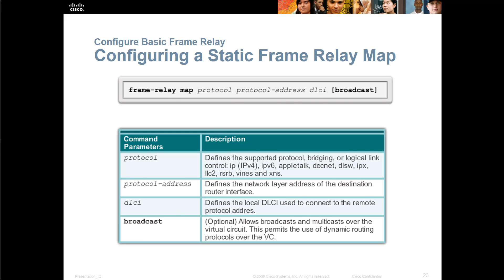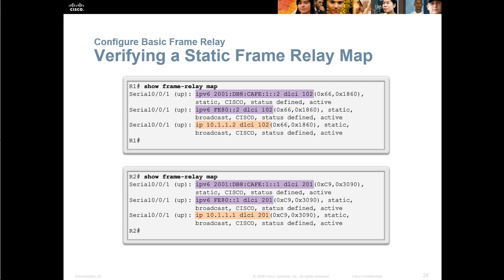Let's look at verifying a static frame relay map using 'show frame relay map.' You can actually see the mapping here — we're doing IPv6 to a DLCI and an IPv4 address to a DLCI. Both are underneath the serial 1 interface: one for R1, one for R2. Notice that both the global unicast address, the link local address, and the IPv4 address are all mapped.